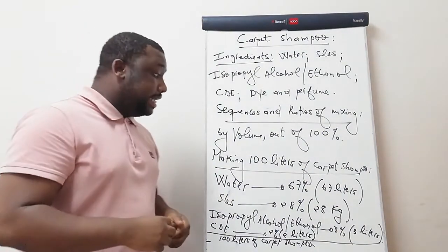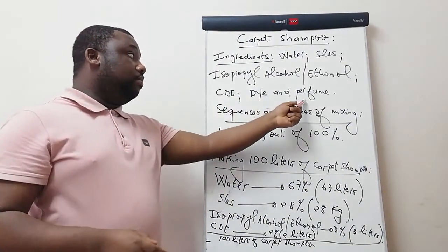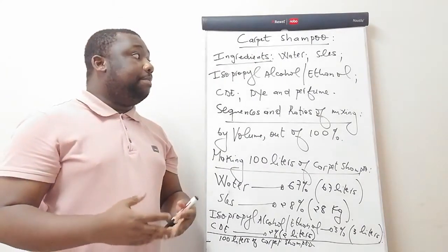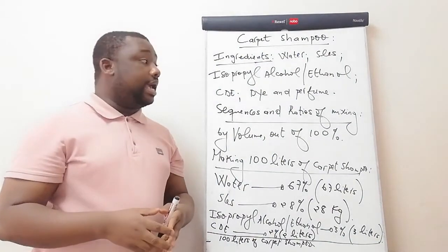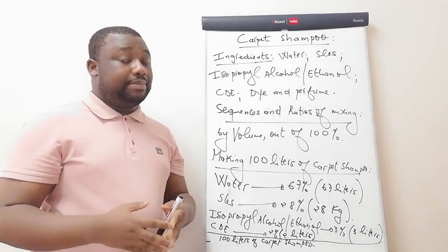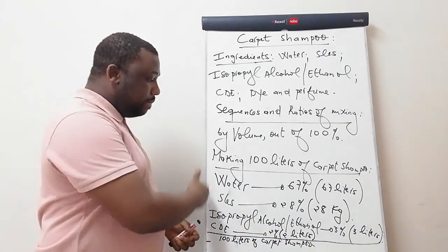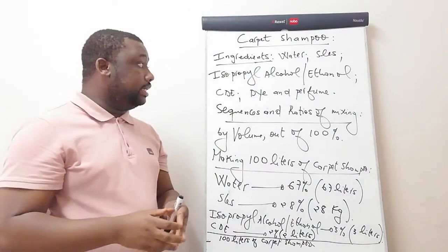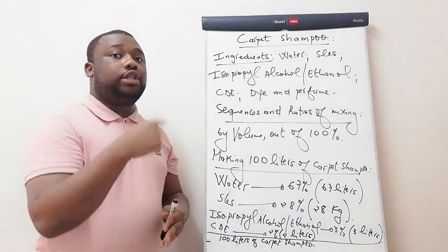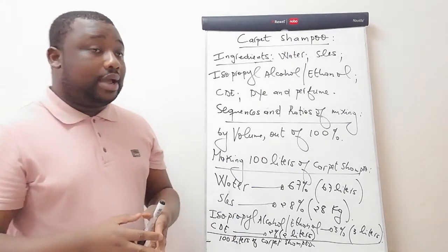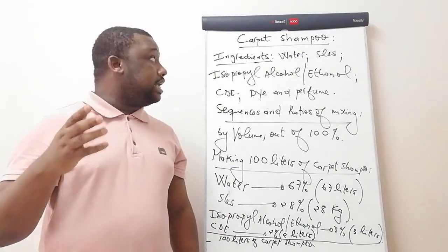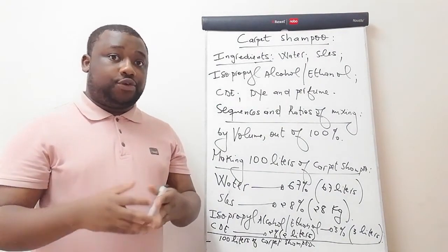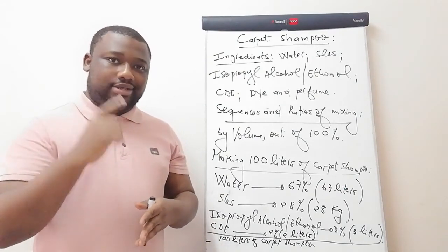There's something I'd like to explain about the dye and perfume. The dye is added according to your preference in terms of amount, based on the appearance you want to give your product. The perfume should be 1% of the total volume. Dye and perfume are important but they are considered as fillers. Thank you guys for watching — make sure you subscribe to the channel. If there's a product you're struggling to manufacture, communicate with us and we'll make a video on it. See you on the next video.